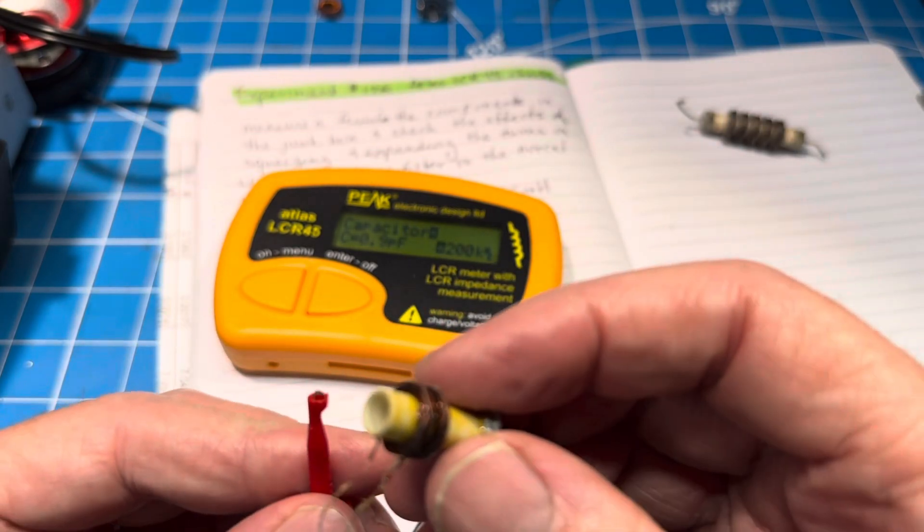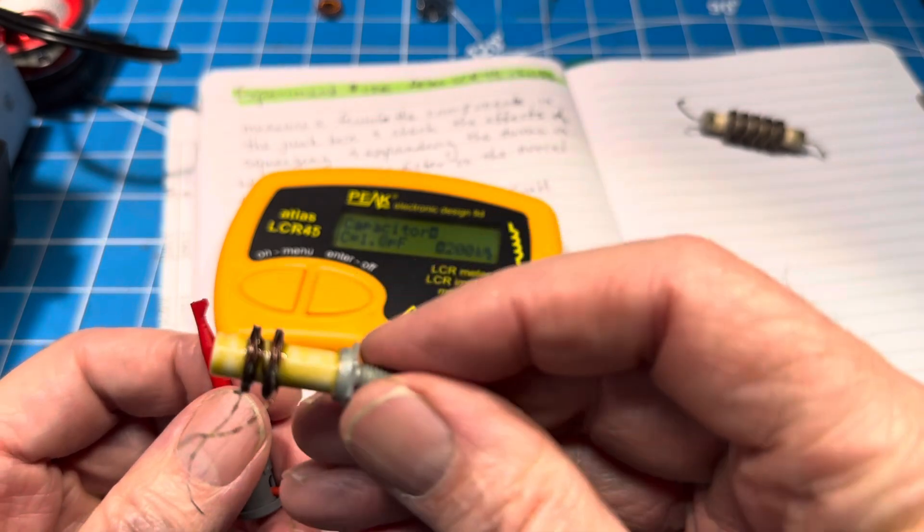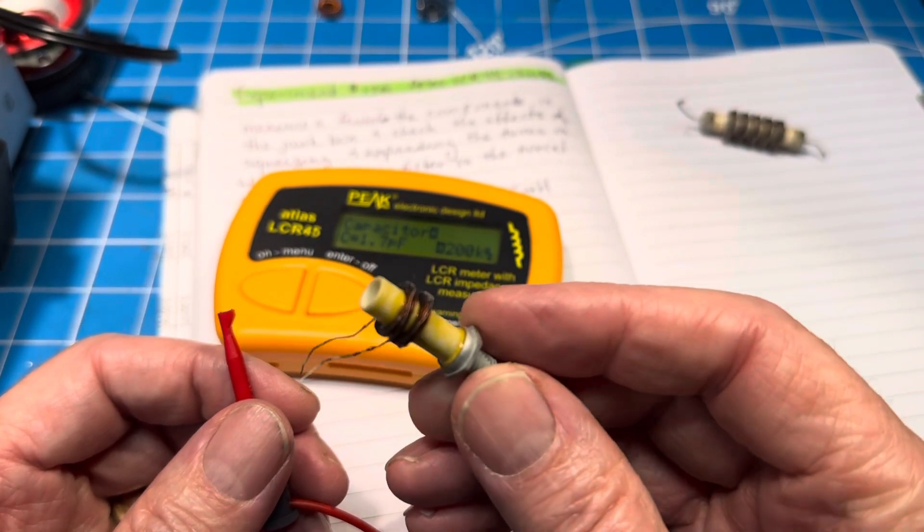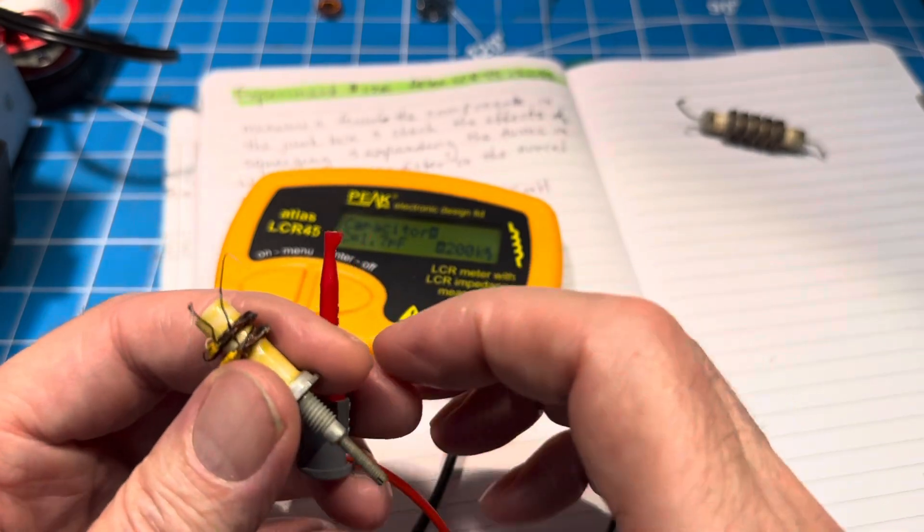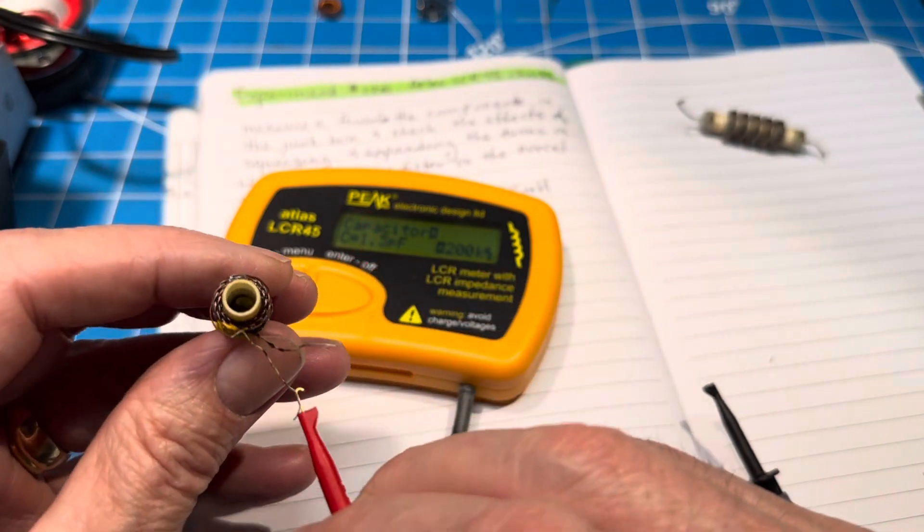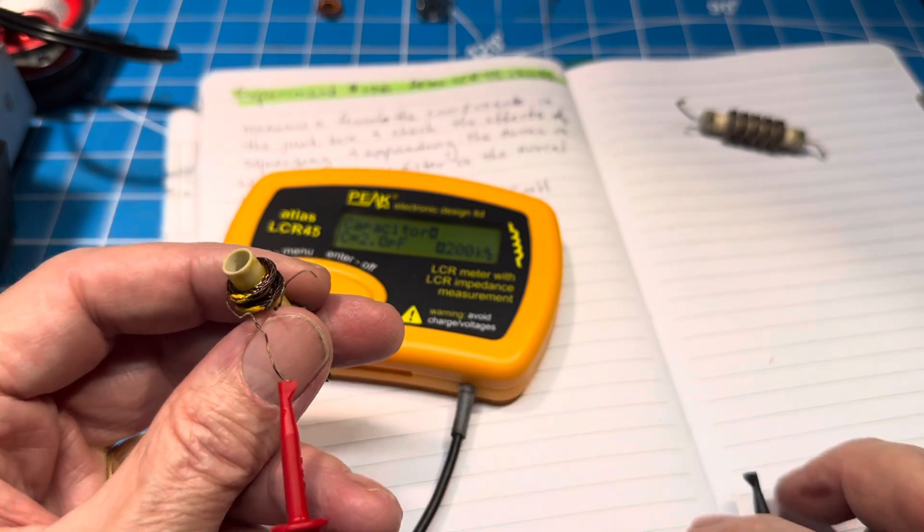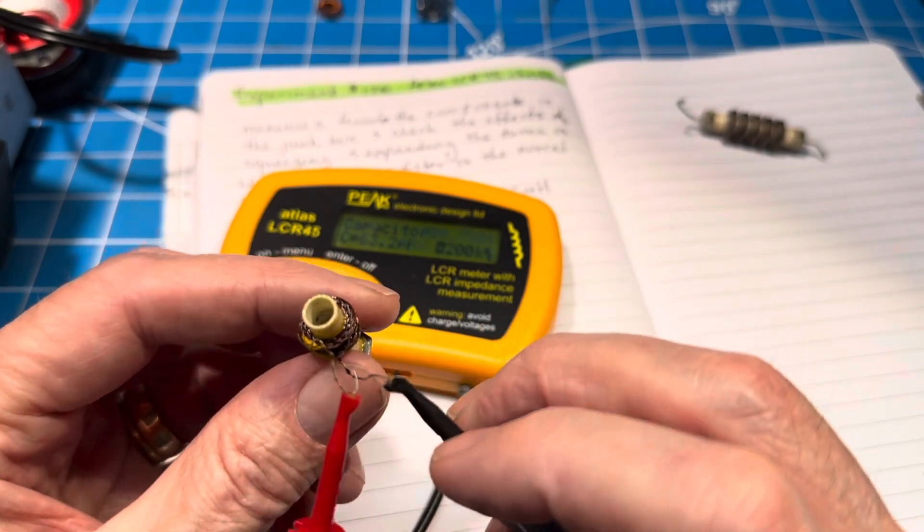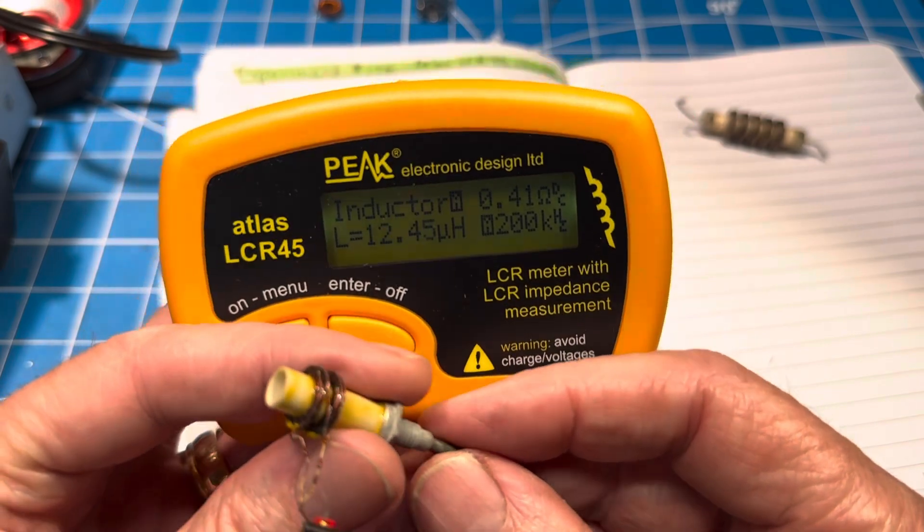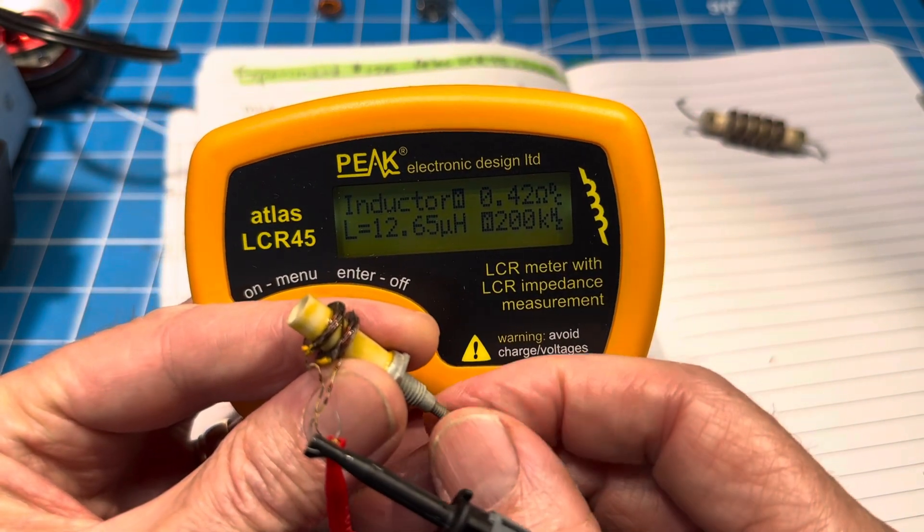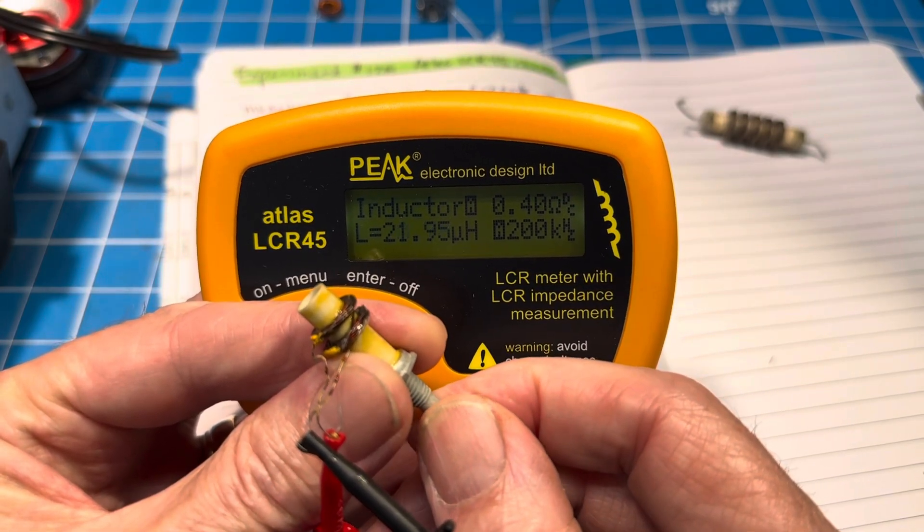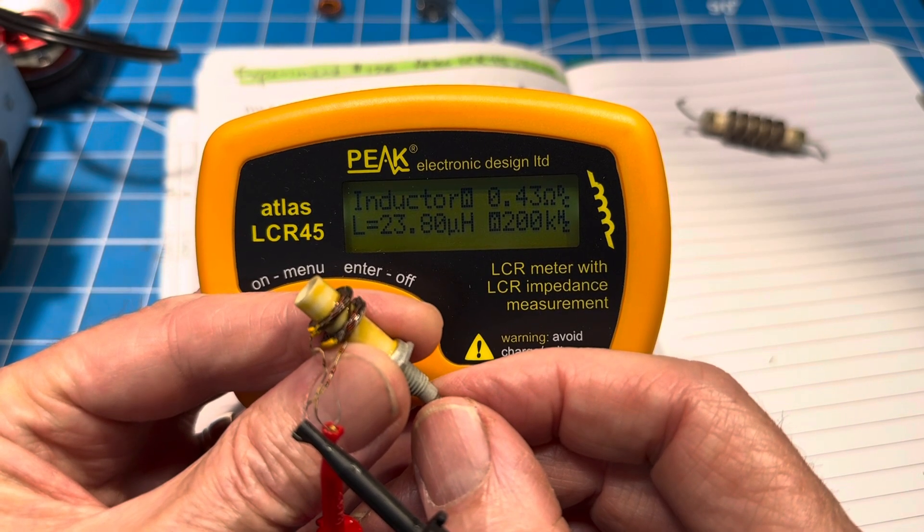And then the last one we'll do is this. First of all, take a guess of what you think the value will be. I guess we're guessing probably microhenries because it's not very big, but it does have what appears to be some kind of iron core. So let's see what we get, one lead and the other lead, and we get 12 microhenries. And the slug is all the way forward. So if I move the slug back, it goes from 12 to 22, 23 microhenries. So that's kind of a cool thing.